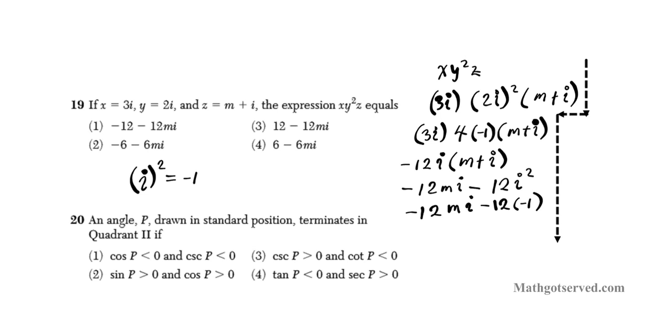So we're going to have -12mi minus, don't forget to distribute this negative, minus 12i². So what is i² again? Remember, i² is negative 1. So it's going to be -12mi minus 12 times negative 1. This becomes -12mi minus times minus becomes a plus, plus 12. You can reorder this and write it in a + bi form. We have 12 - 12mi as your final answer. So option 3 is your correct result.